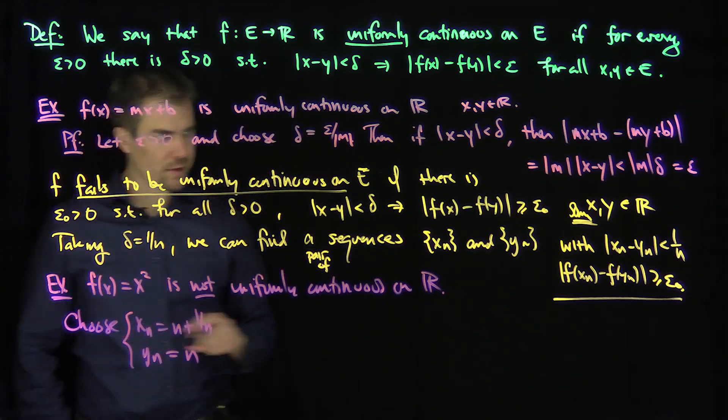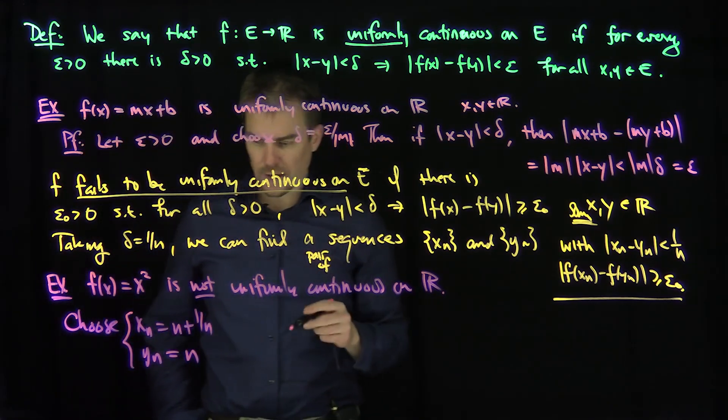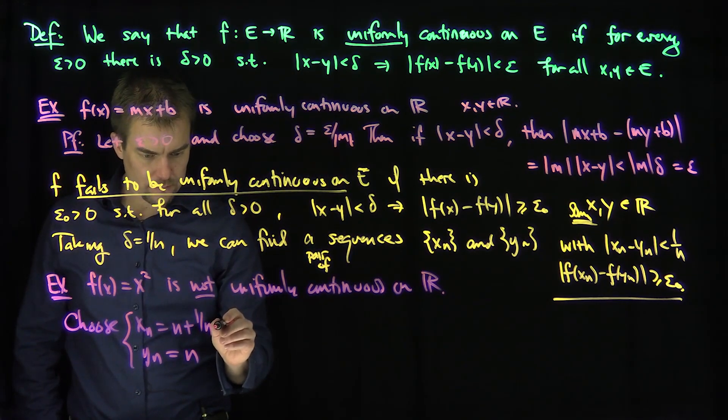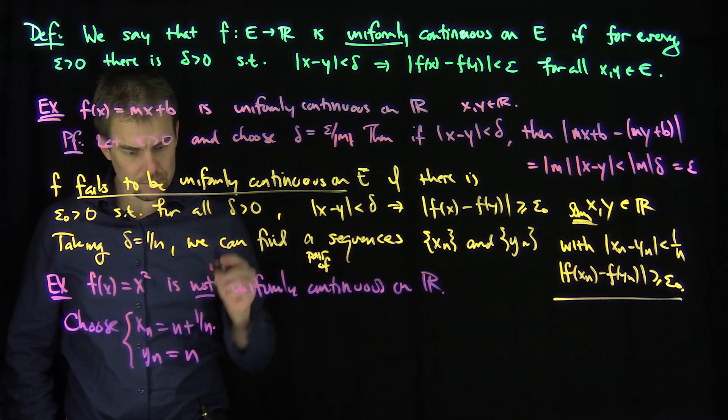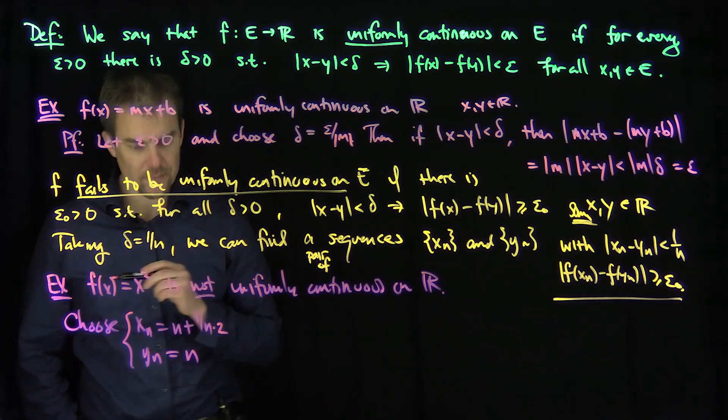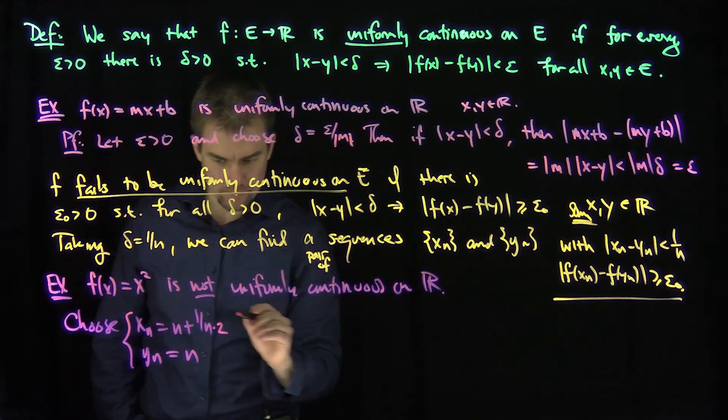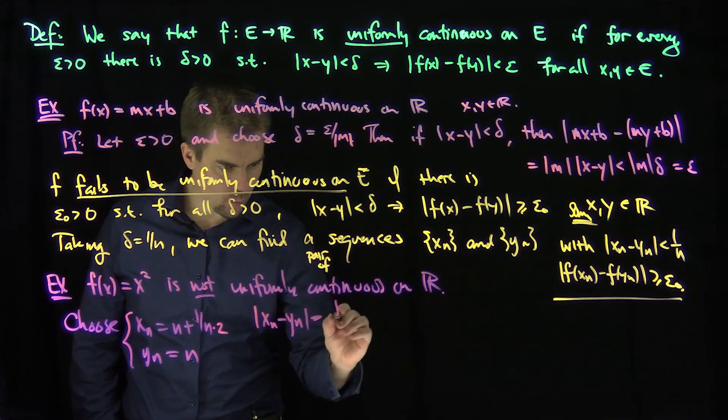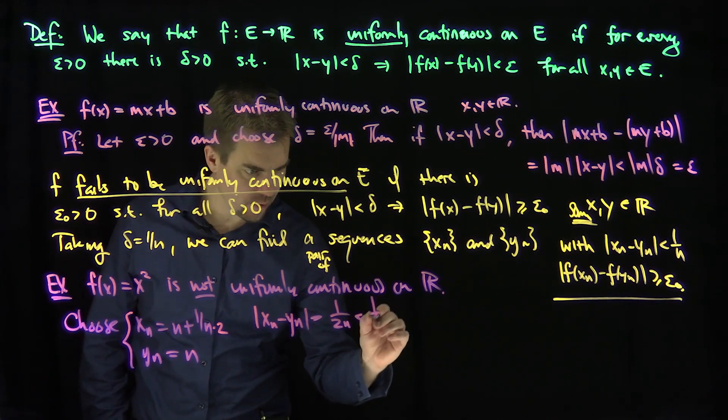So I can put maybe like a 2 over n here. Now, definitely what's happening, if there's a 2n in the denominator, then I have x_n minus y_n is just 1 over 2n, which is less than 1 over n, right?